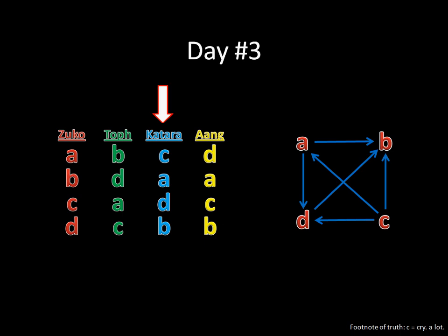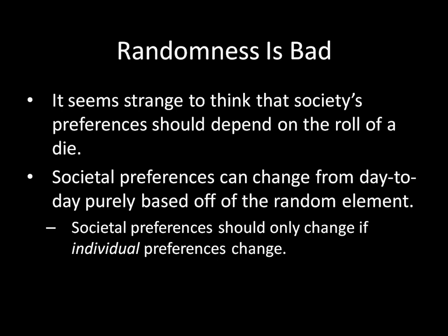Now, this should strike you as being really weird and counterintuitive, because on day one, B was the best outcome for the society. And then on the next day, D was the best outcome for society. And now today, C is the best outcome for society. So this is very strange, where what's determining the best preference or best outcome or best alternative is a simple random draw. That is weird, that is odd, and that is silly, because nothing underlying the system is changing here other than some random move. And that's why we don't want to allow randomness. Randomness is bad. It seems strange to think that society's preferences should depend on that roll of the die that's determining who's the random dictator. And so we want to make sure that that doesn't happen.